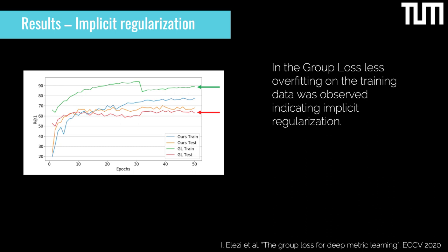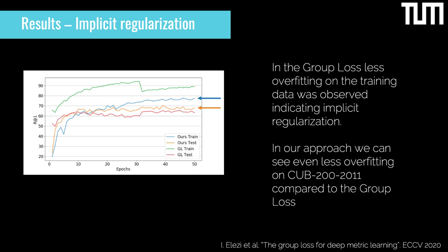We also compare our training behavior to that of the Group Loss, a method that also takes all relations in a mini-batch into account, but through rule-based label propagation. The Group Loss authors observed implicit regularization reducing overfitting. Our approach overfits even less on CUB 200-2011 than the Group Loss, indicating that we induce even stronger implicit regularization.